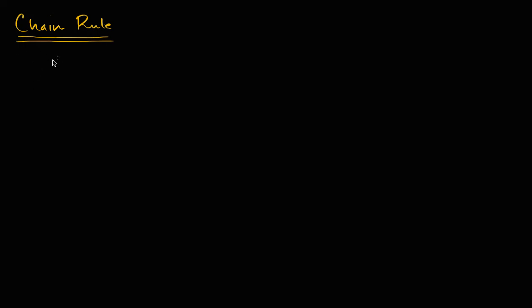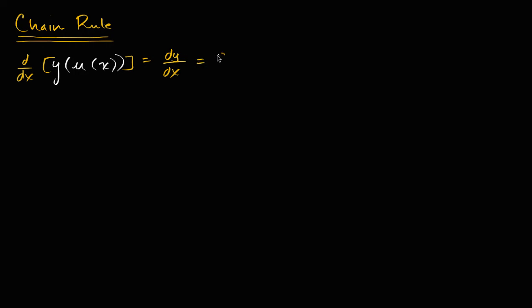So the chain rule tells us that if y is a function of u, which is a function of x, and we want to figure out the derivative of this — so we want to differentiate with respect to x — we could write this as the derivative of y with respect to x, which is going to be equal to the derivative of y with respect to u times the derivative of u with respect to x. This is what the chain rule tells us.